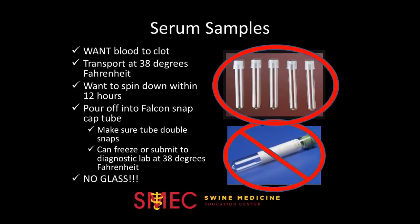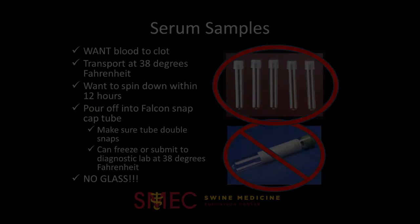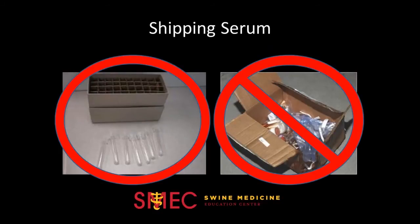For serum samples, you want the blood to clot so that the serum can be spun off. It actually clots better at a warmer temperature, so it does not need to be immediately cooled down, but can wait to go in the cooler for around 20 minutes to facilitate the clotting process. It should be spun down within 12 hours of collection. You then pour the serum sample off, and the sample can be frozen, or if kept at 38 degrees Fahrenheit, it should be sent into the diagnostic lab within 2 to 3 days. The lab can't process any glass, so it is extremely helpful to pour the serum off into plastic falcon snap cap tubes.